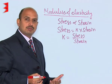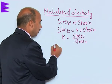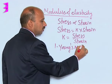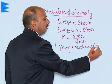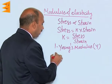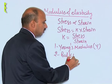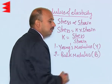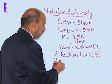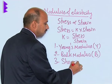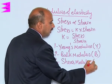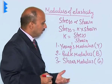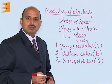There are three types of modulus of elasticity. The first one is called Young's modulus, represented by Y. The second one is the bulk modulus, represented by capital B. And the third one is the shear modulus, represented by capital G. Now we will explain all three types of modulus of elasticity one by one.